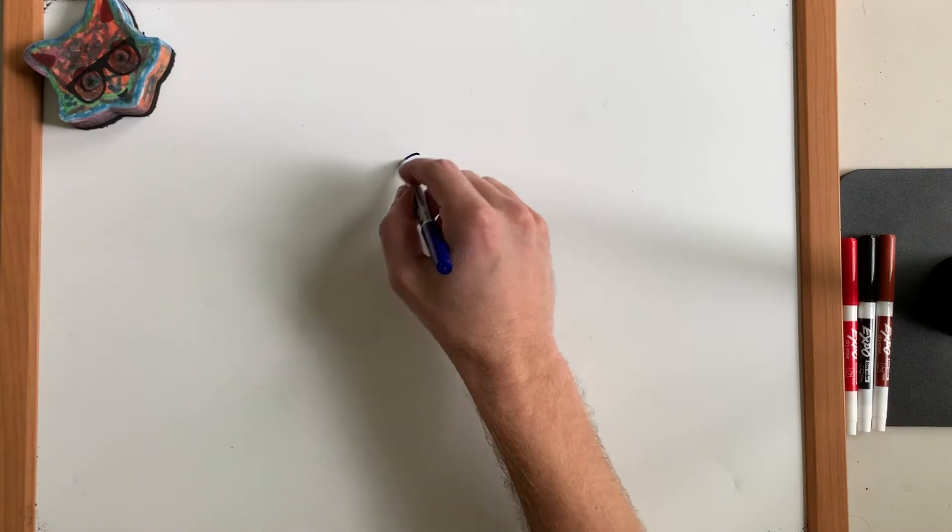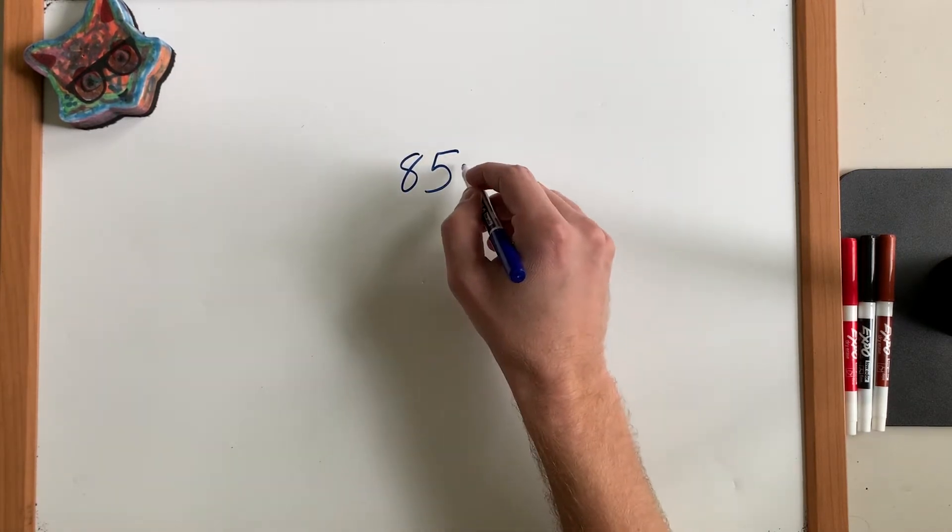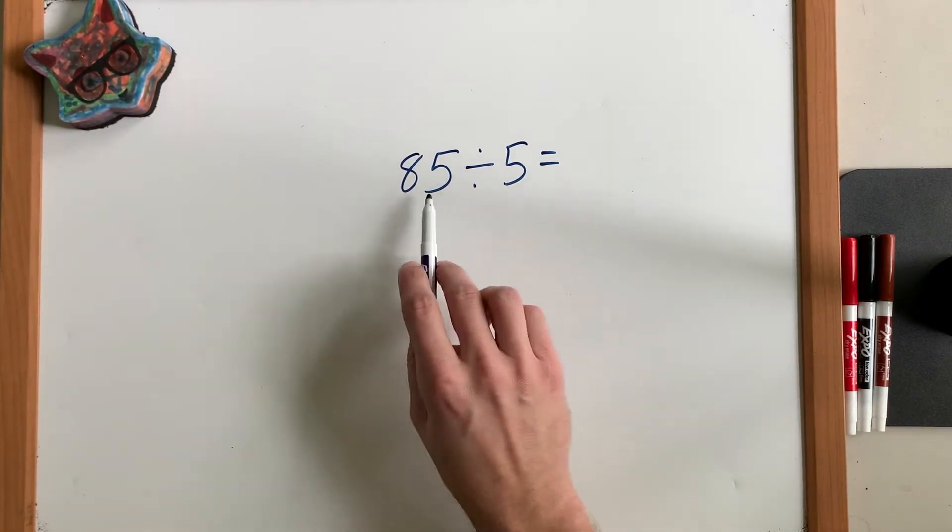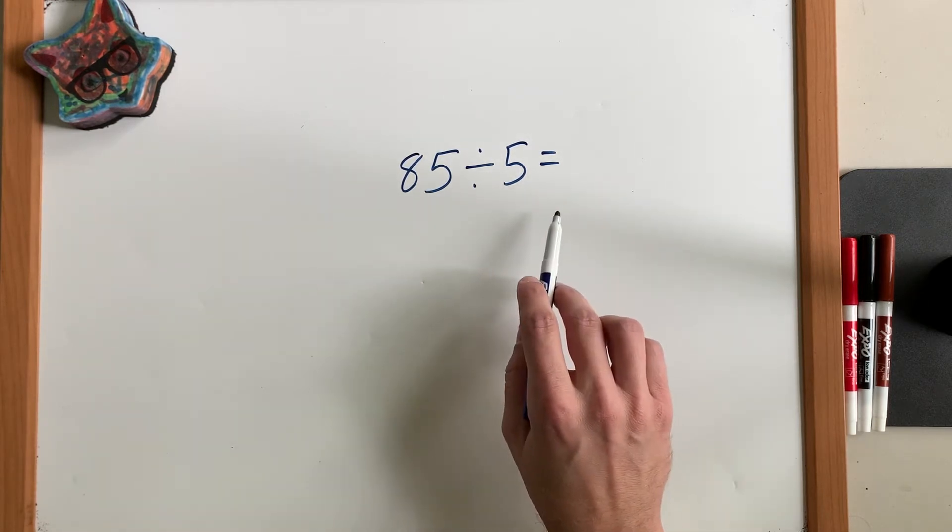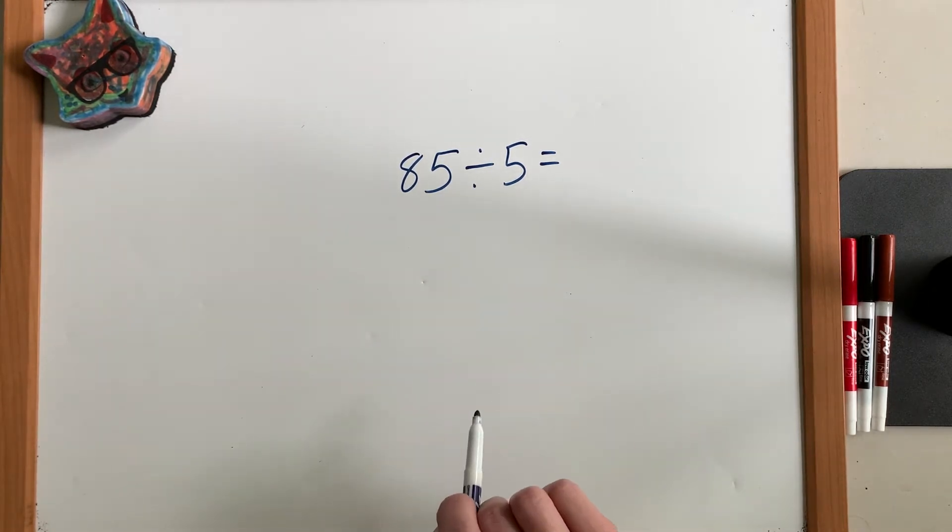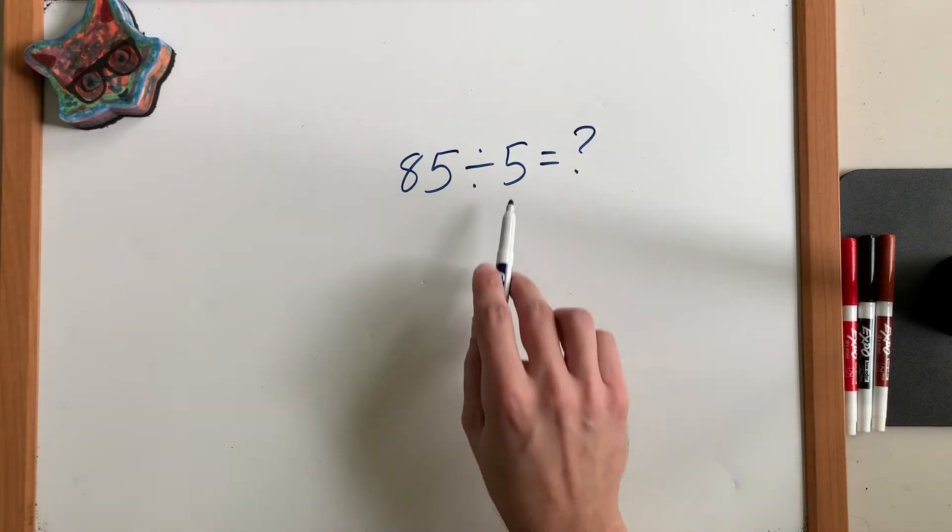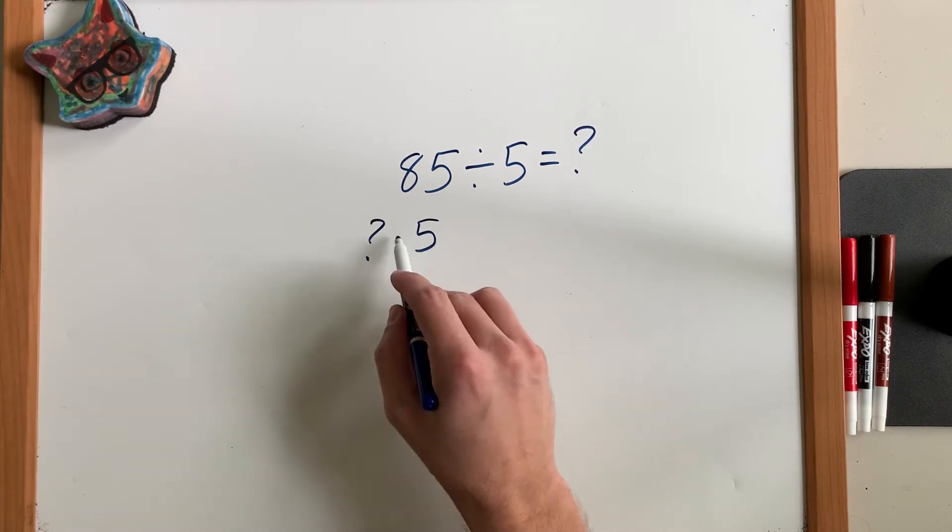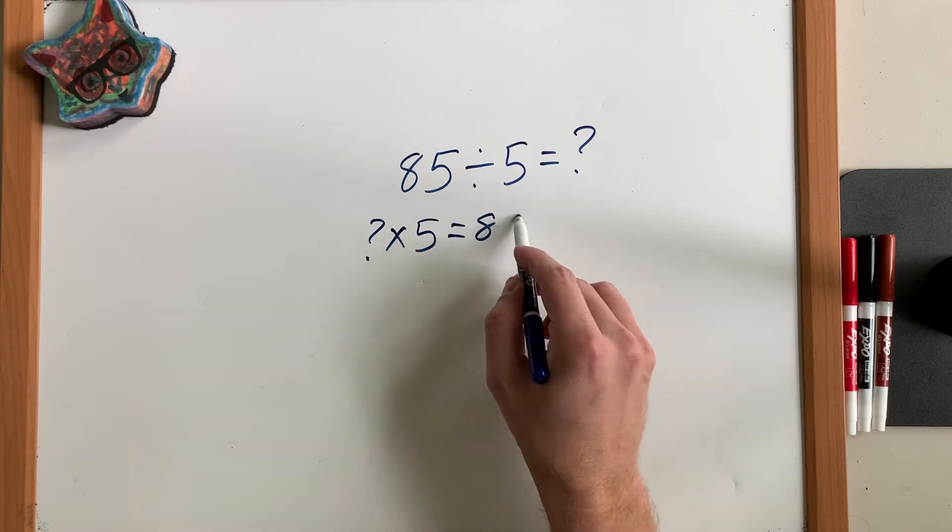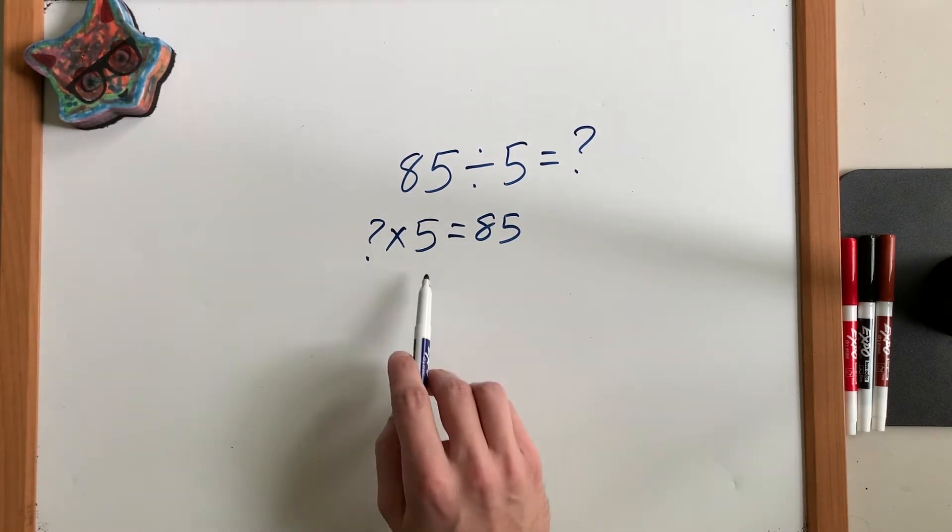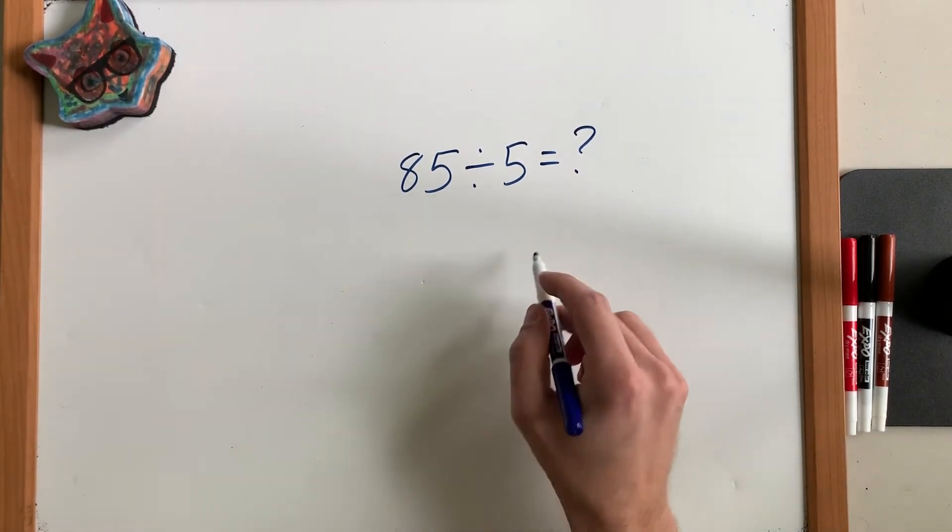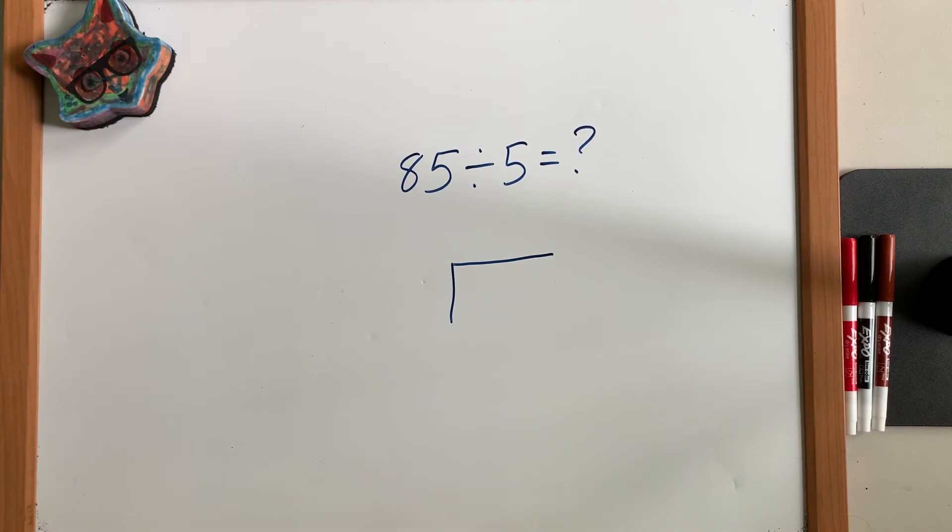But now what happens if I do something like this? 85 divided by 5. This is going to be outside of what most people do for their multiplication tables. And so we need a way to figure out how to break this up since reading it backwards, 5 something times 5 equals 85, and this is going to be outside the 15 by 15 multiples. If you want to learn past 15, you can, but a lot of people don't and that's okay.